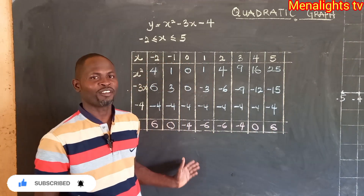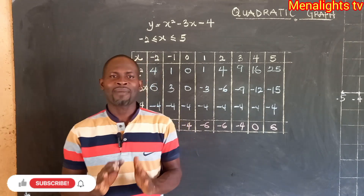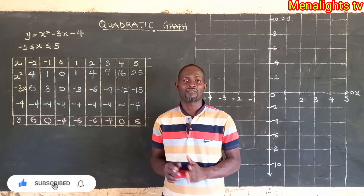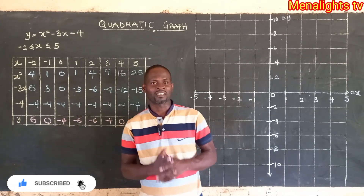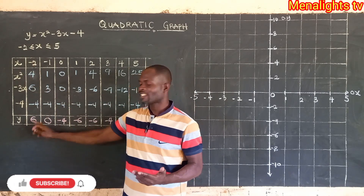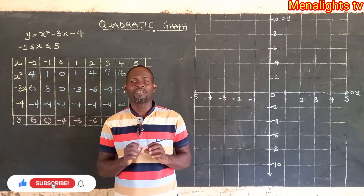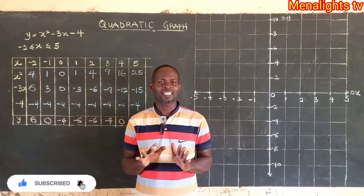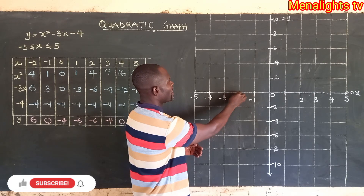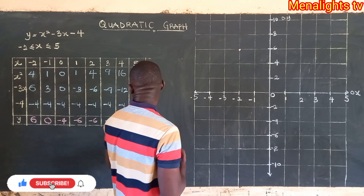Now that we have the values of y, we are going to the graph board to draw the graph. Remember, this graph is a curve — it's not a straight line. We use the table of values to draw the curve. When x is negative 2, y is 6, so we locate negative 2 on the x-axis and positive 6 on the y-axis — negative 2 and positive 6 meet here.